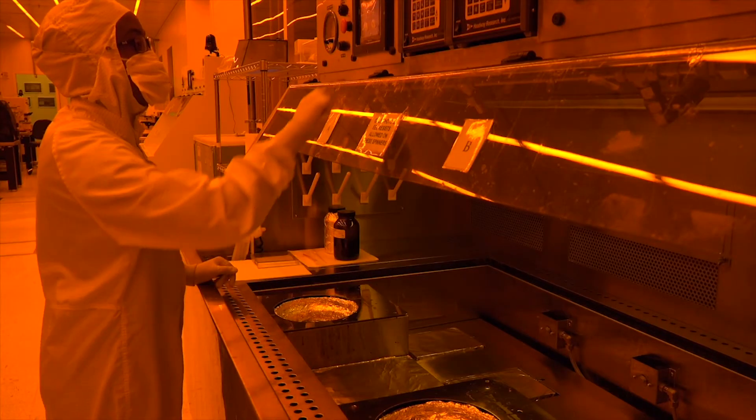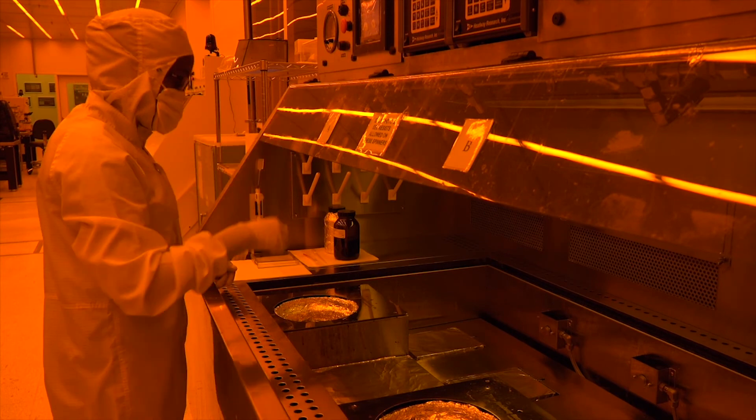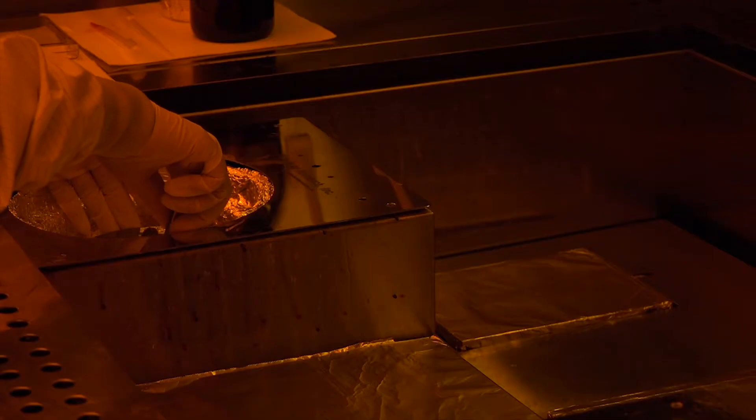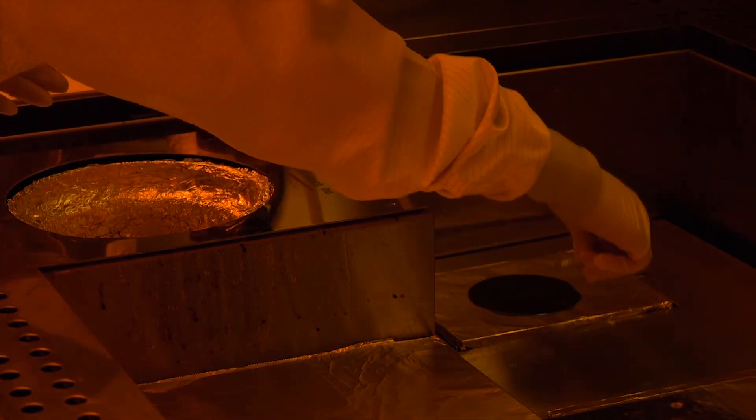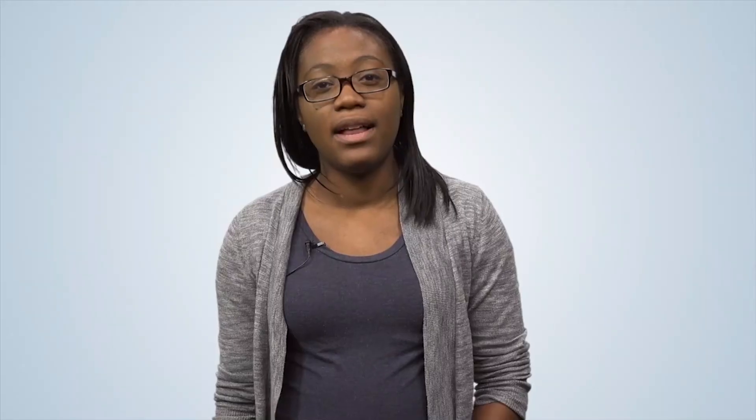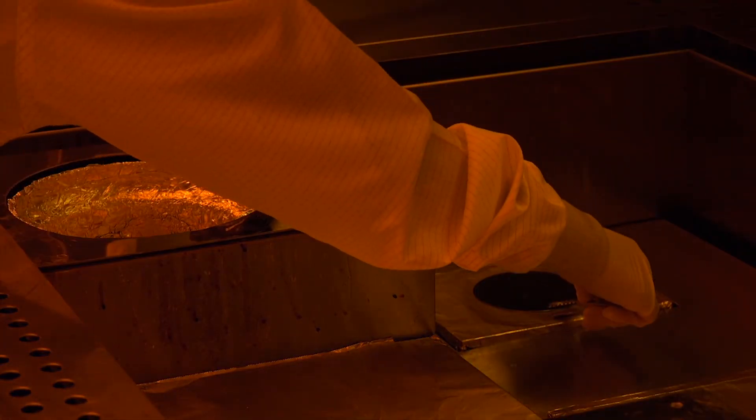After spinning the photoresist, we remove the wafer from the spin coater and bake the wafer on a hot plate at 115 degrees Celsius for one minute. The bake time and temperature can vary depending on the photoresist being used. The bake removes any remaining solvent from the liquid resist and solidifies it into a solid, thin polymer film. This particular resist forms a polymer film that is 1.5 micrometers thick. For comparison, the width of a human hair is about 100 micrometers. So this film is quite thin. After the one minute bake, we are now ready to pattern the wafer.